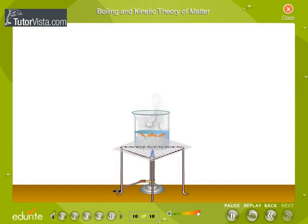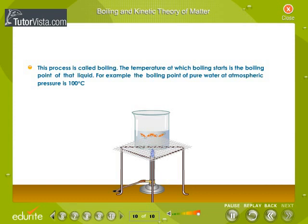Boiling and kinetic theory of matter. There is an attractive force existing between the molecules of a liquid. A molecule at the center is attracted by molecules all around. If a molecule at the surface has sufficient energy to overcome the intermolecular attraction, it leaves the surface and escapes — this is called evaporation. When the temperature is raised, more particles leave the surface; this is the boiling point of that liquid. At this temperature, only change of state takes place and the temperature does not increase until all of it is converted to the vapor state. The arrows between molecules show the attractive force existing between them.